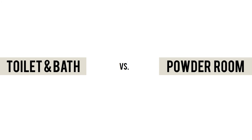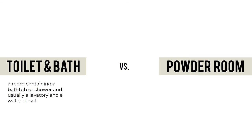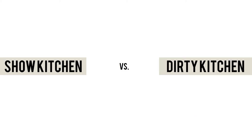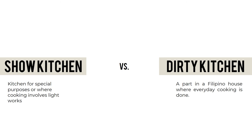A toilet and bath contains a bathtub or shower, usually a lavatory, and a water closet. A powder room, also known as a half bath or guest bath, has two of the four main bathroom components — typically a toilet and a sink. A show kitchen is for special purposes or light cooking, featuring attractive appliances and display items. The dirty kitchen is where everyday cooking is done — typically using charcoal or wood fire.